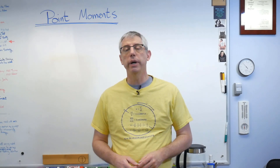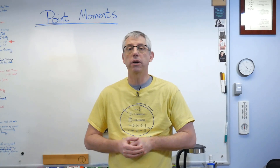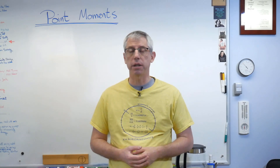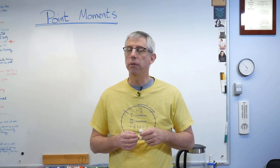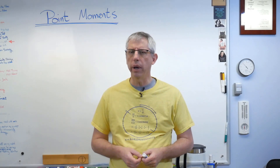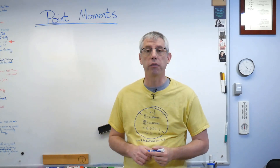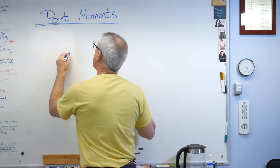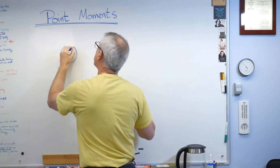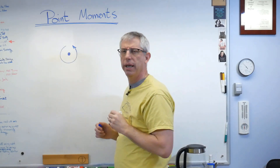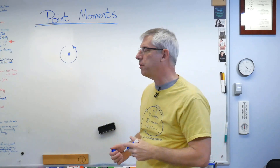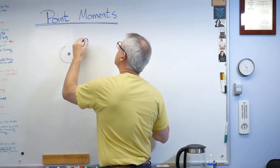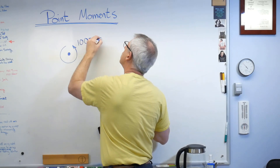Hey scholars, it's good to be back with you. Today I'd like to talk about how to handle point moments when you're doing statics problems. What exactly is a point moment? The way we draw it on our free body diagrams is simple: there's a dot with a curved arrow going around it, and a number indicating the moment or torque applied at that point — something like a thousand Newton meters.